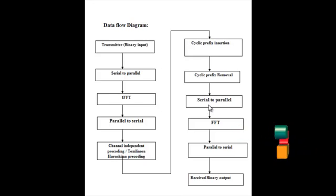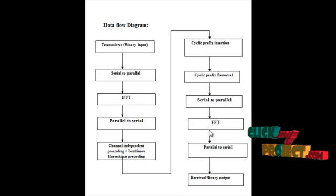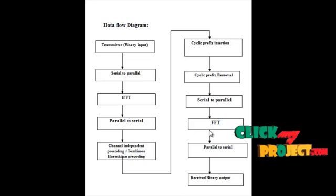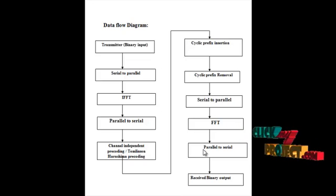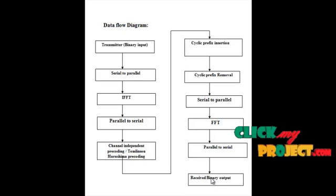The output is given into the FFT — Fast Fourier Transform method. The Fast Fourier Transform output is given into the parallel-to-serial method. The parallel-to-serial method output is used for receiving the binary output.